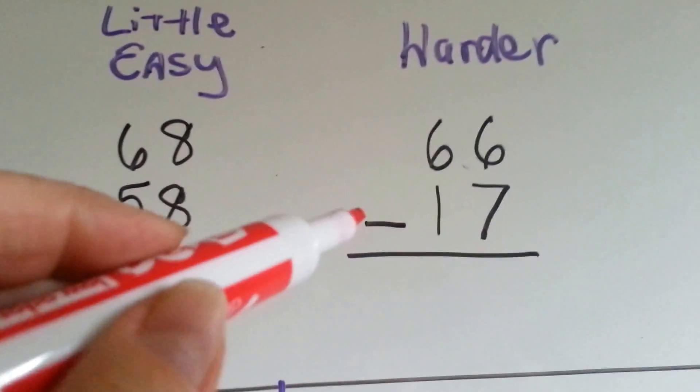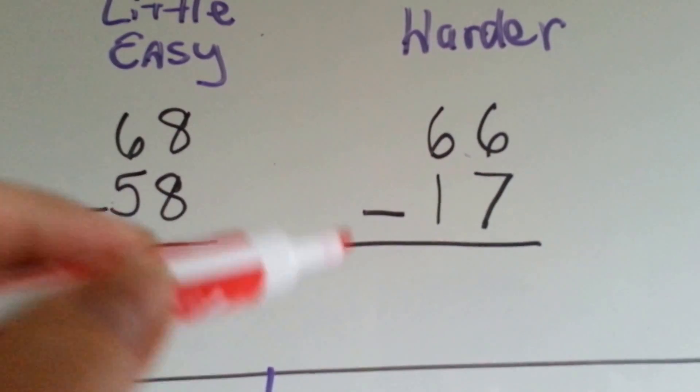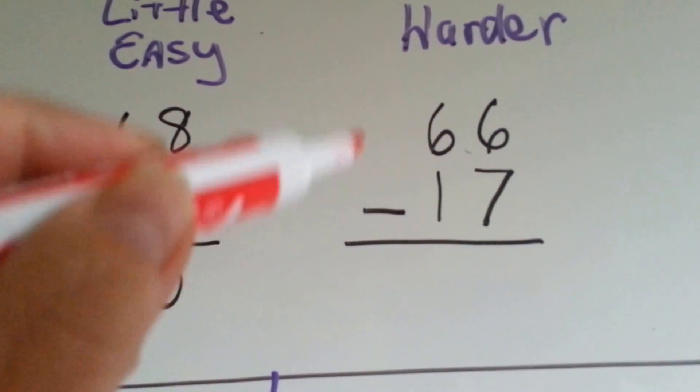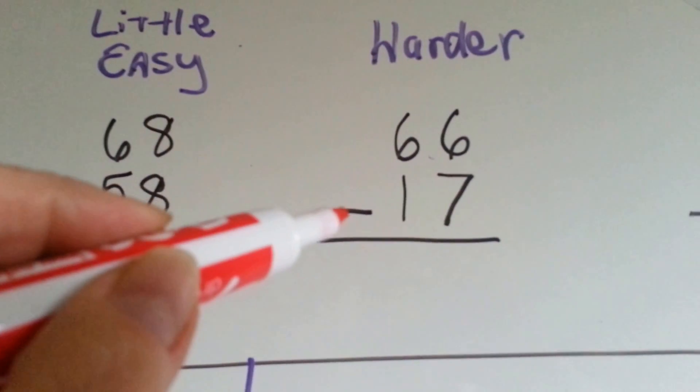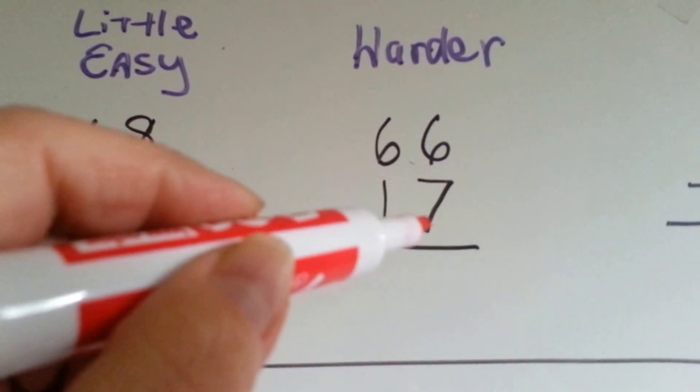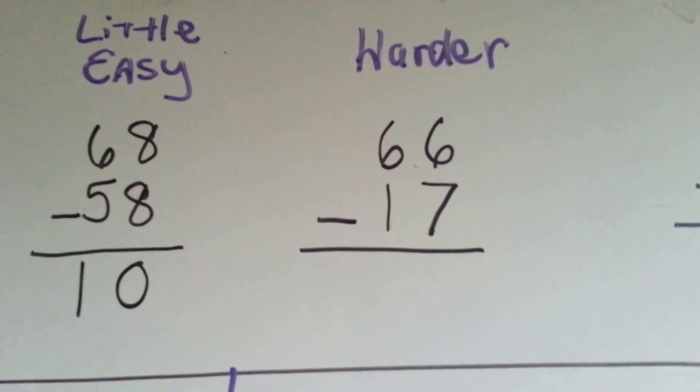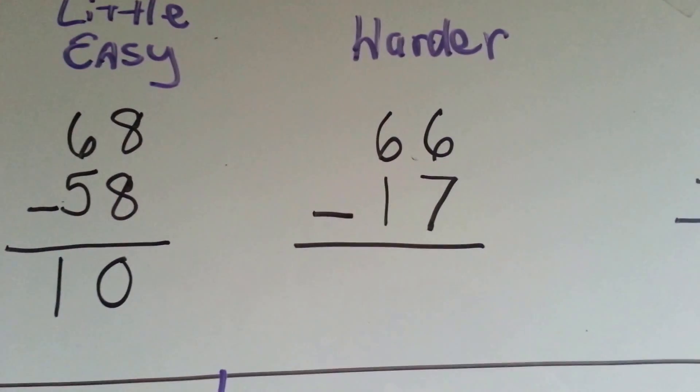But what happens when you have a problem like this and you need to do it in your head? 66 minus 17. Well, you can't have 6 and take 7 away, so you'd have to borrow. It's a little hard to do in your head. So we have a trick.